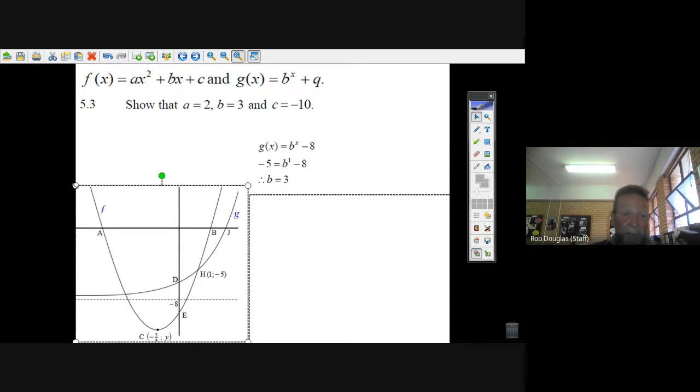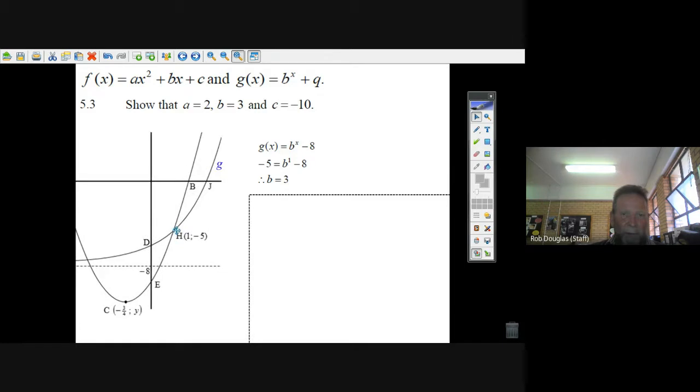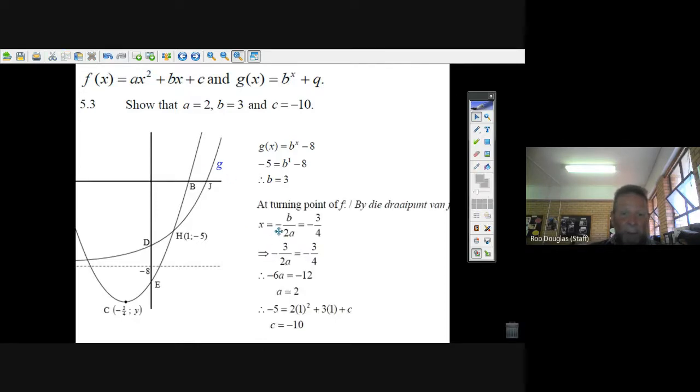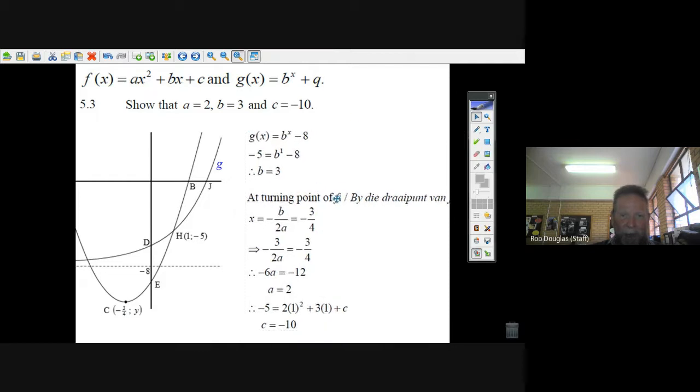But hey, now we've got to try and figure out what a and c are. Well, all we're given is the coordinates of the turning point here. Or sorry, yeah, the coordinates are minus 3 over 4 and y. Well, we've got the axis of symmetry there. So what we can do is we know that the axis of symmetry minus b over 2a equals negative 3 over 4. But hey, b equals 3, so we can substitute in that 3 just like that.